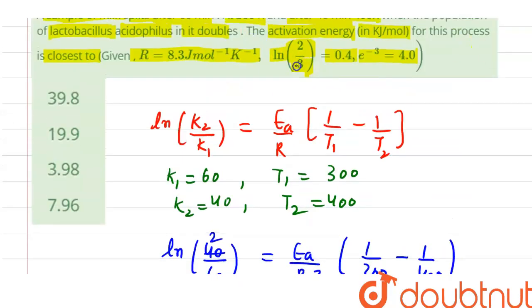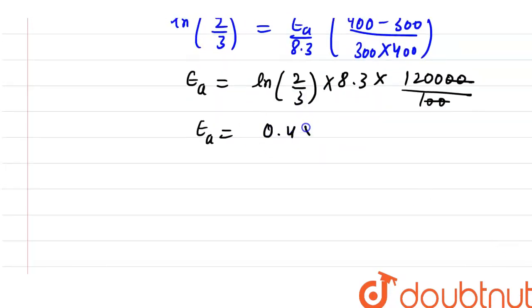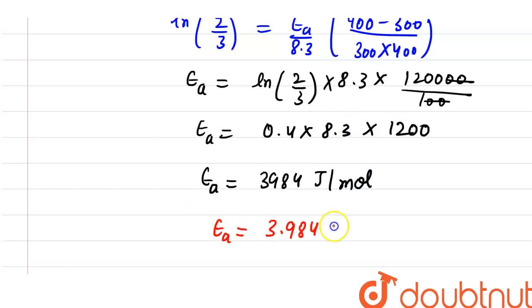It is given which is 0.4. So it is 0.4 × 8.3 × 1200. On solving this, Ea = 3984 joules per mole. Here we have to calculate Ea in kilojoule per mole, divided by 1000, so it is equal to 3.984 kilojoule per mole.